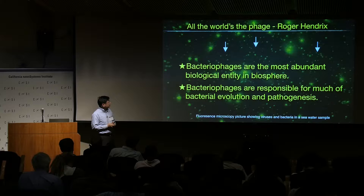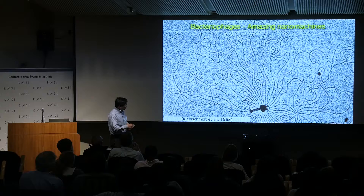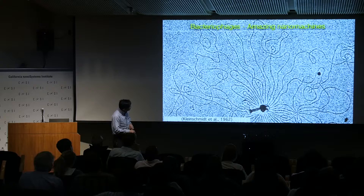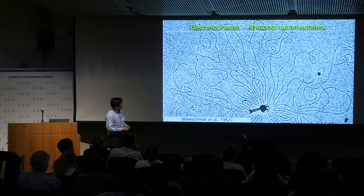Bacteriophage is responsible for much of bacterial evolution and pathogenesis. So we think this is really important. It's also a very simple machine — an amazing nanomachine. This is a tiny, almost half-century-old EM picture showing a tiny phage packed with tons of DNA.